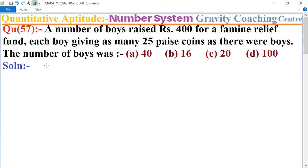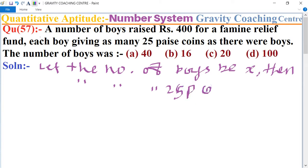So first of all, let the number of boys be x. Then the number of 25 paise coins also be x.